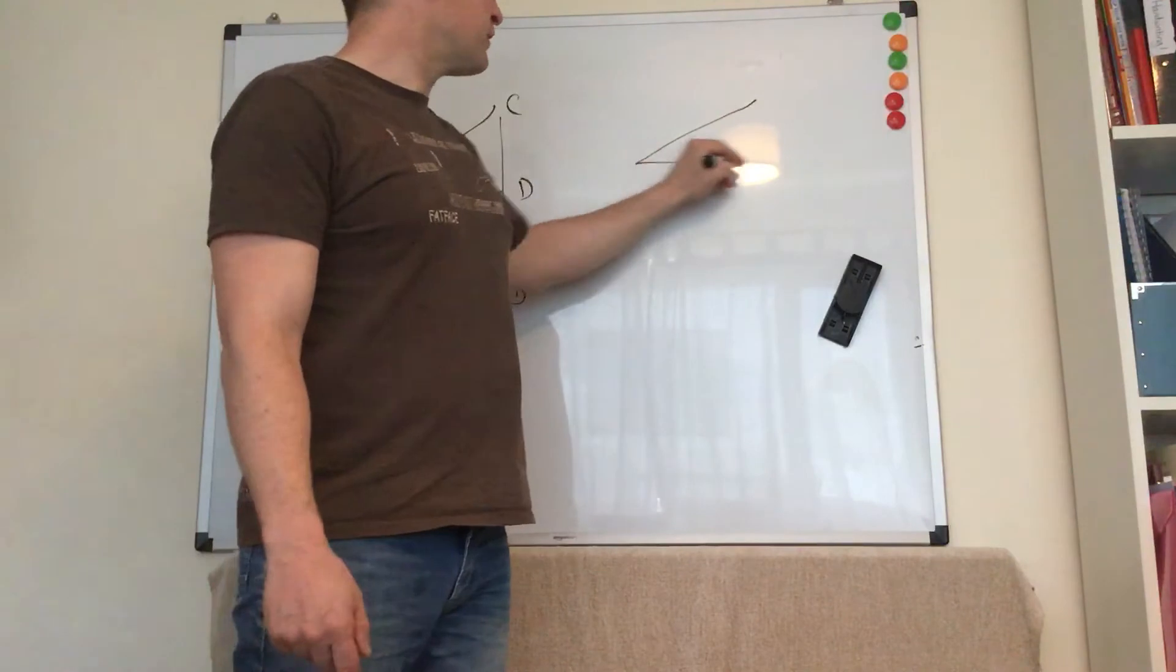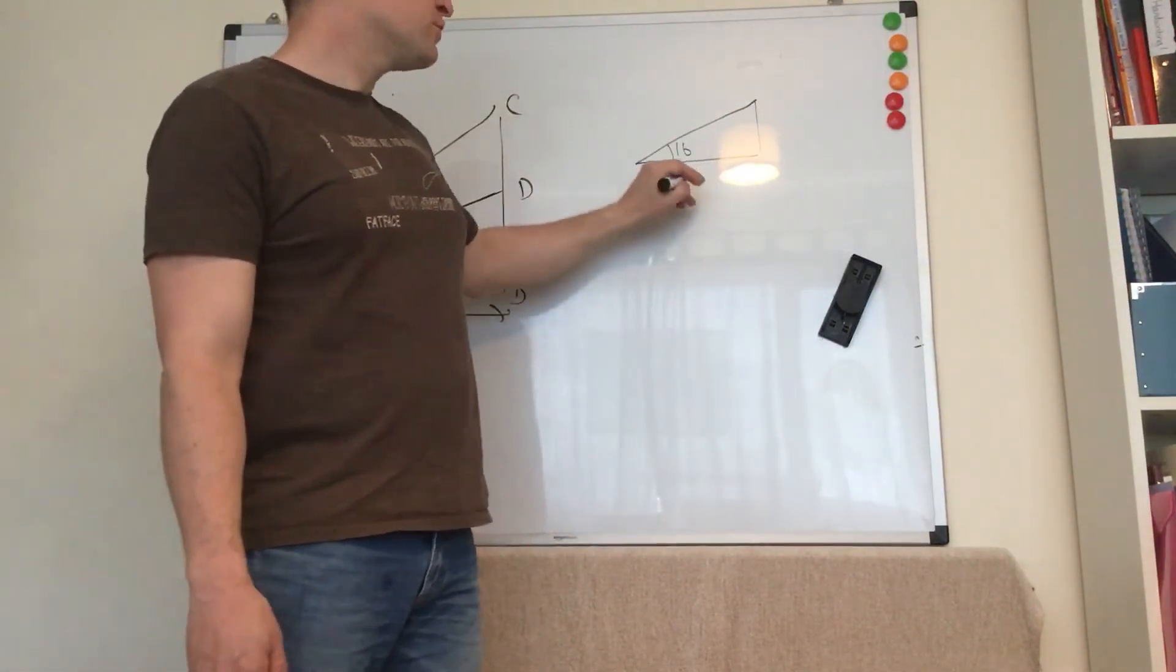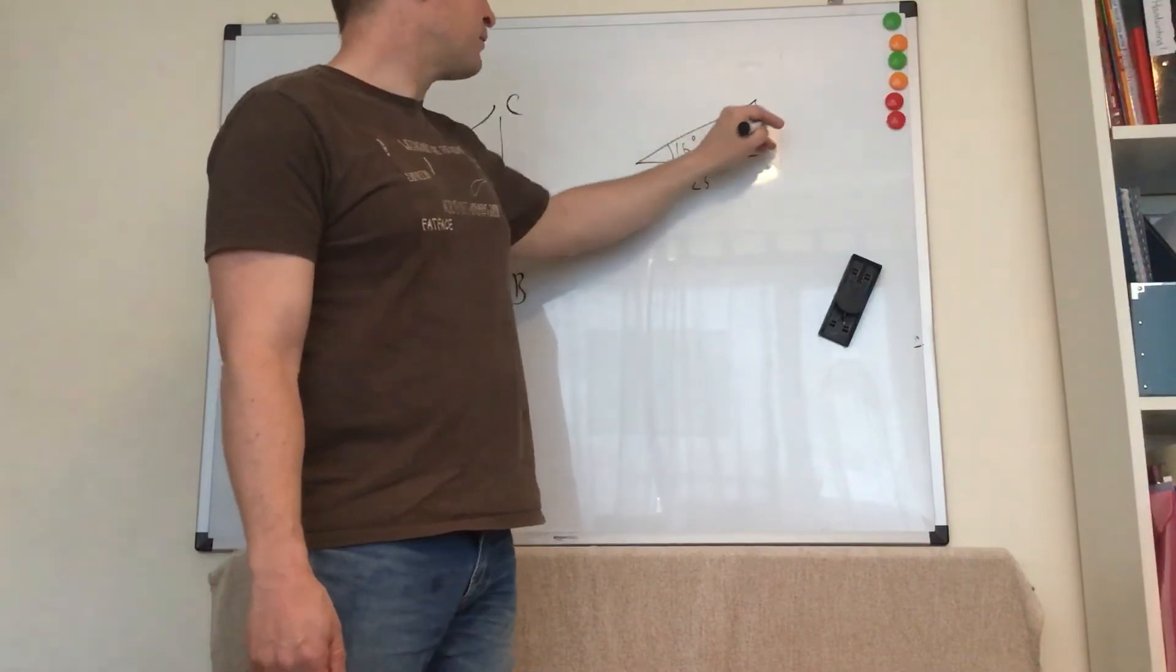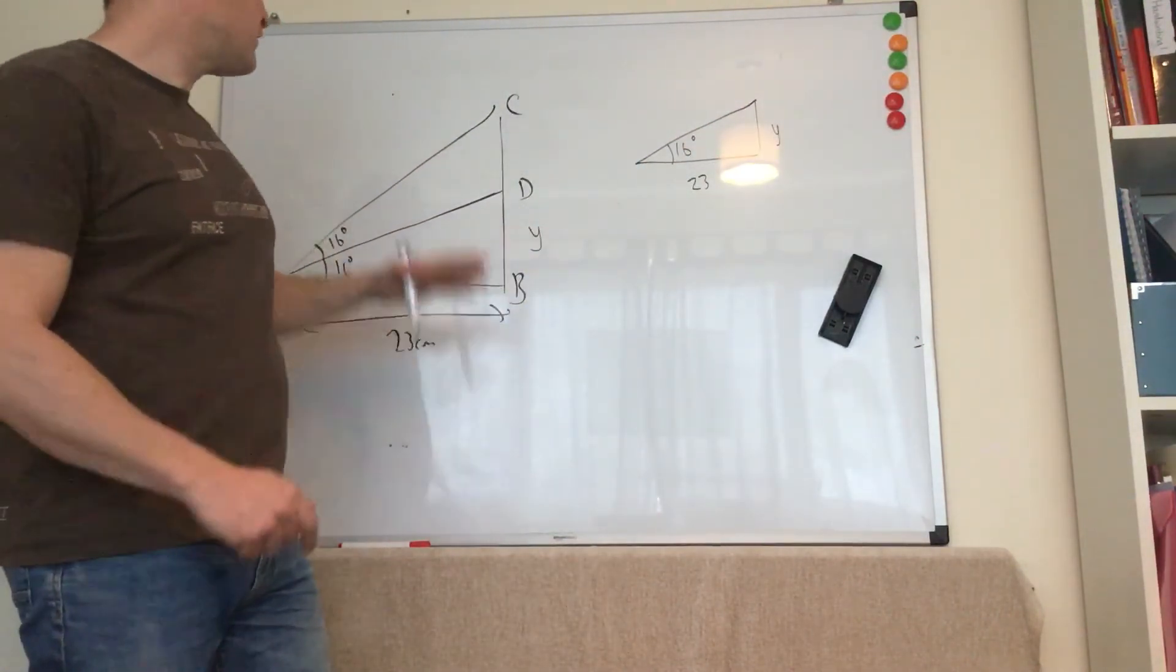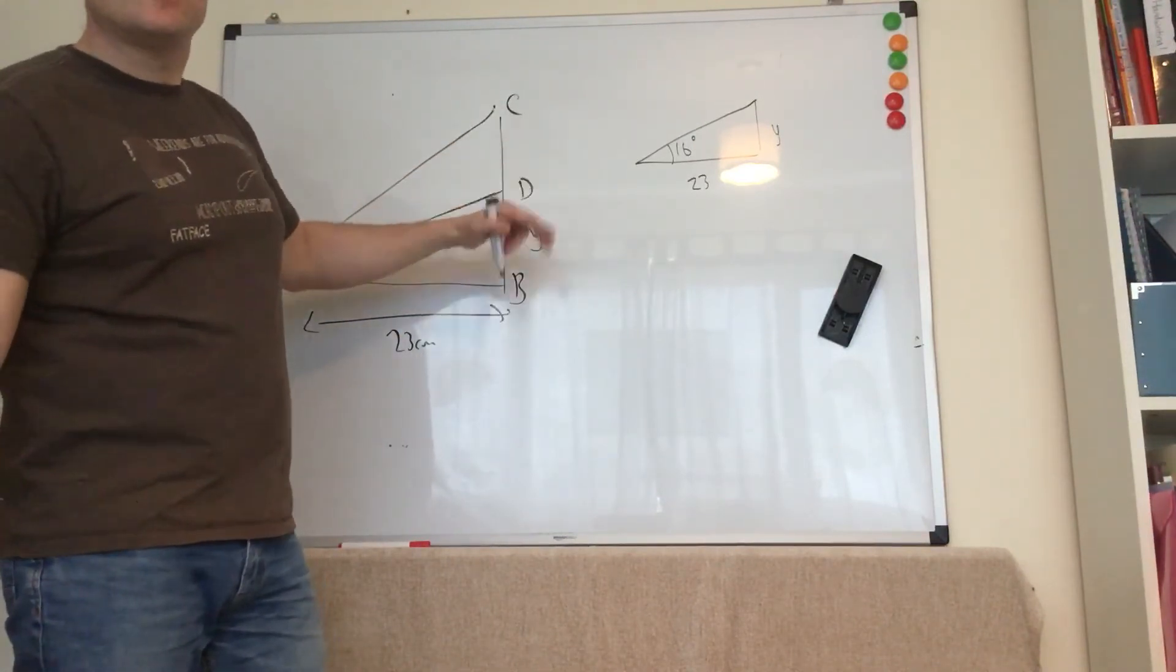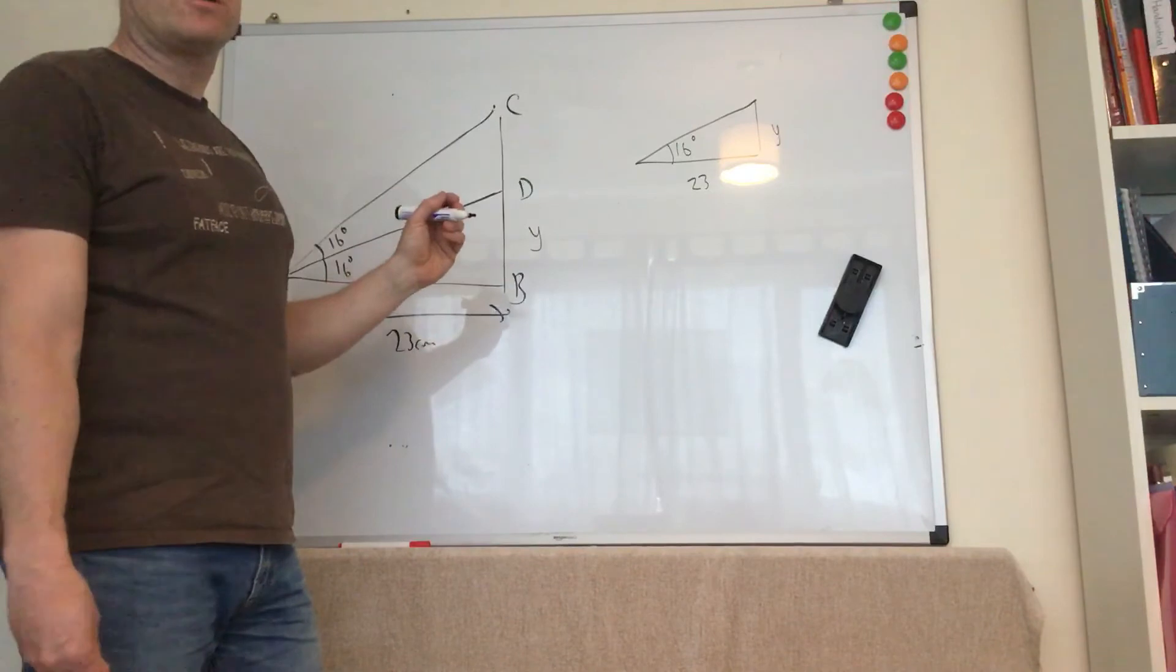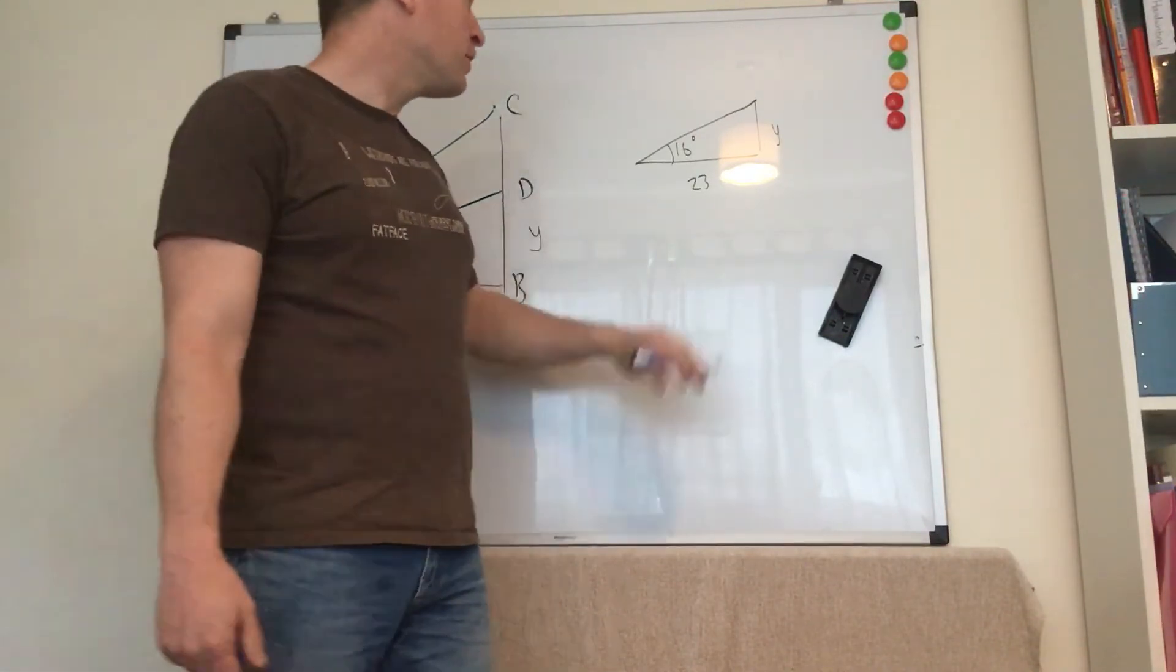If I just draw the little triangle now, I've got a 16, 23, and I'm going to call that length y. Okay. Unfortunately, it's not the case that if that angle gets bisected, this line gets bisected. Okay. Unless it's a nice isosceles triangle and we're drawing down between the two base angles. That's a different thing.